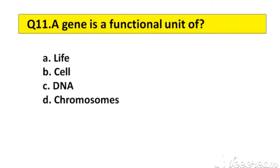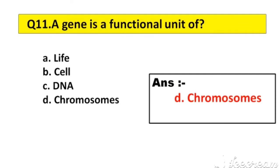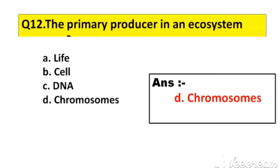Question number 11. A gene is a functional unit of: A. Life, B. Cell, C. DNA, D. Chromosomes. The right answer is option D, Chromosomes.